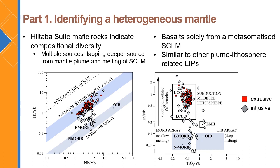To reiterate what that variation looks like: within the Hildibus Suite we see compositional diversity, which could represent multiple sources — possibly tapping a deeper source from a mantle plume and melting from the subcontinental lithospheric mantle — whereas the basalts are solely derived from a metasomatised subcontinental lithospheric mantle source. This type of relationship, where intrusive rocks show multiple sources and the extrusive component shows a singular source, is similar to other plume-lithosphere related large igneous provinces such as the Emeishan and the Tarim large igneous provinces in China.